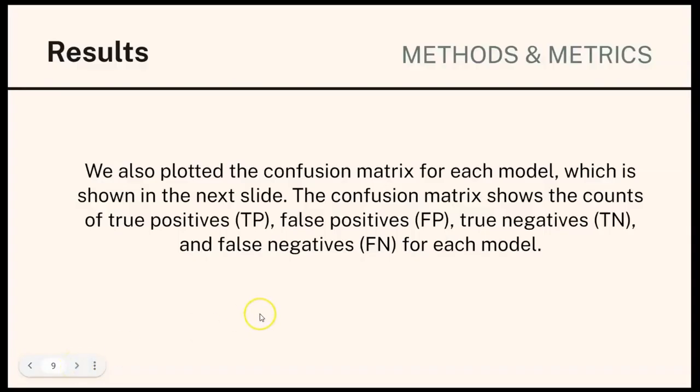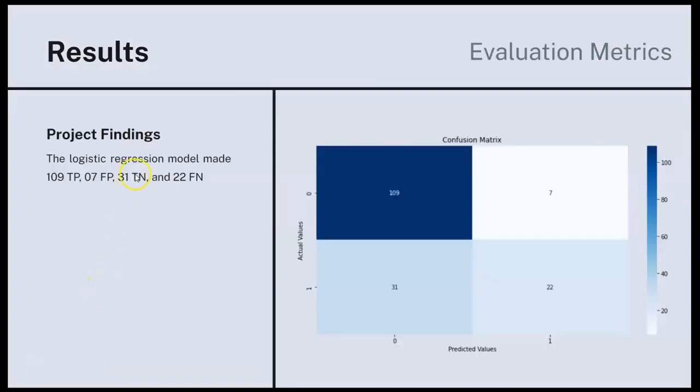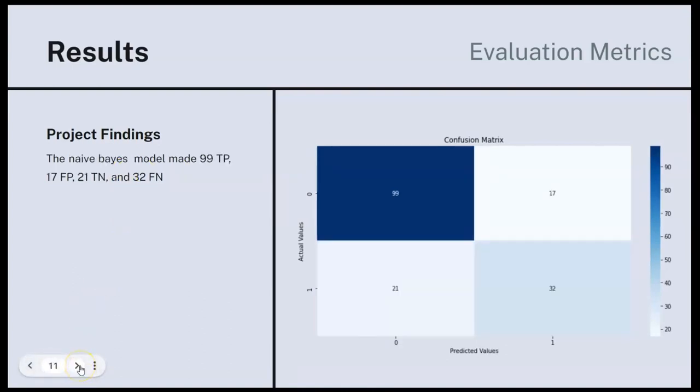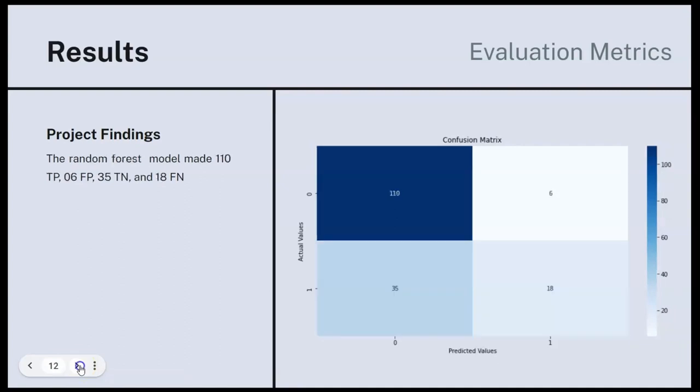Next, we also plotted the Confusion Matrix for each model, which is shown in the next slide. This is the Confusion Matrix for the Logistic Regression, and this is the Confusion Matrix for the Naive Bayes model, and this is for the Random Forest. And lastly, this is the Matrix for the Voting Classifier model.